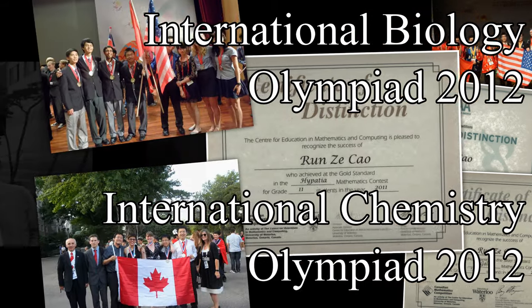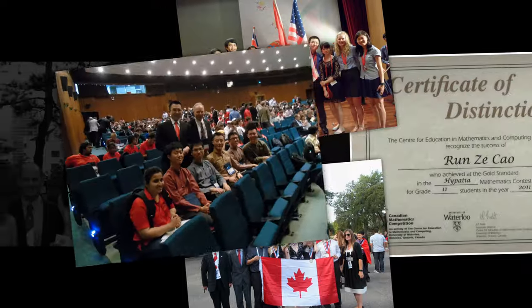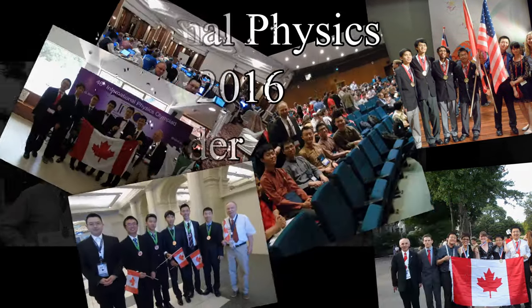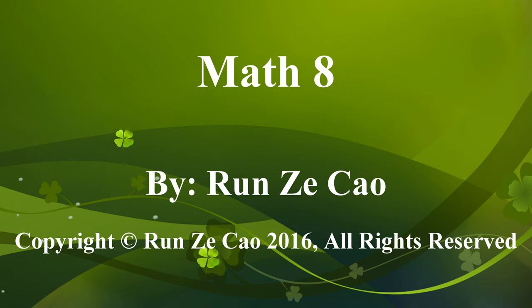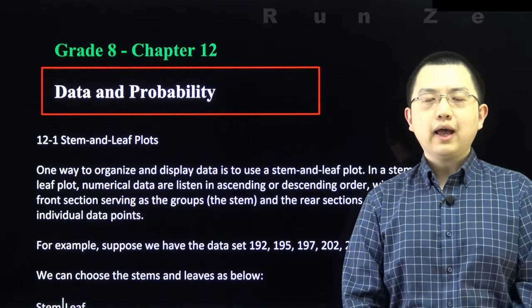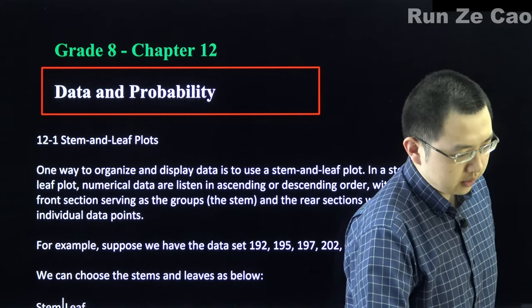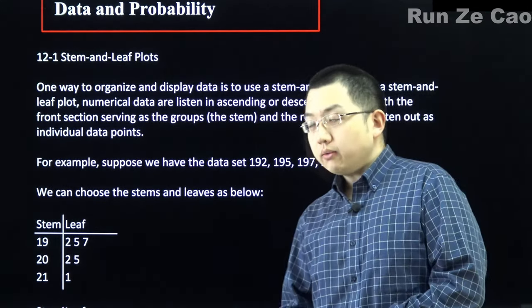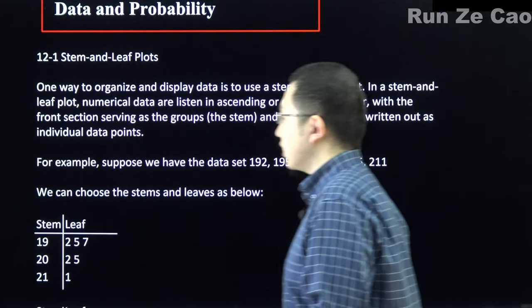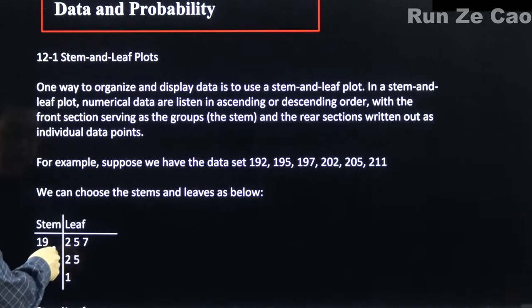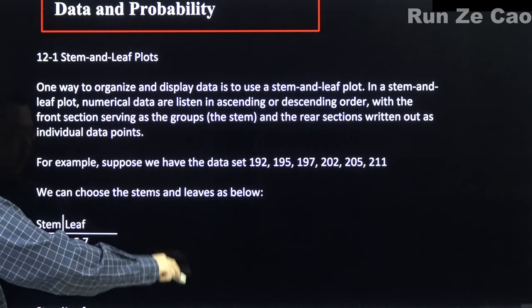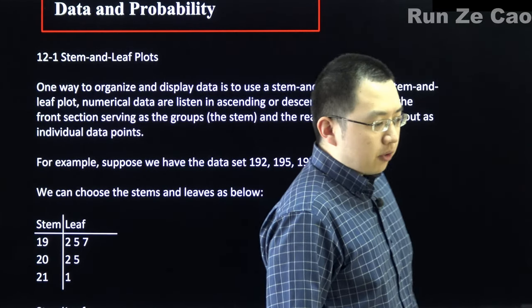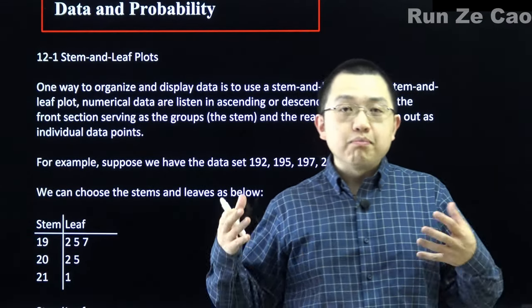When you have information, sometimes you need to present it or interpret other people's presentations. One way to organize and display data — not that commonly used in everyday life — is a stem and leaf plot. It's basically a histogram except the bars are chains of numbers that specify the individual data points, as opposed to a histogram which just says there are this many within a given range of numbers.